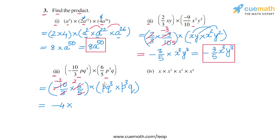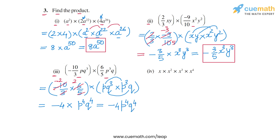Then for the variable parts: p × p³ = p⁴, and q³ × q = q⁴. So we get p⁴q⁴. The final product is −4p⁴q⁴. This is the answer for part 3.